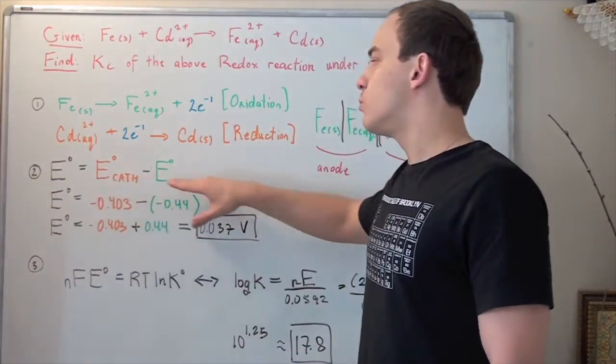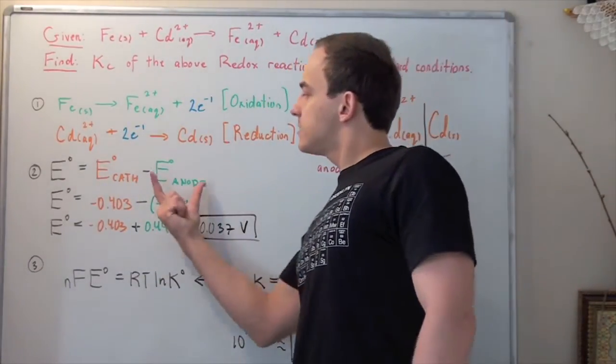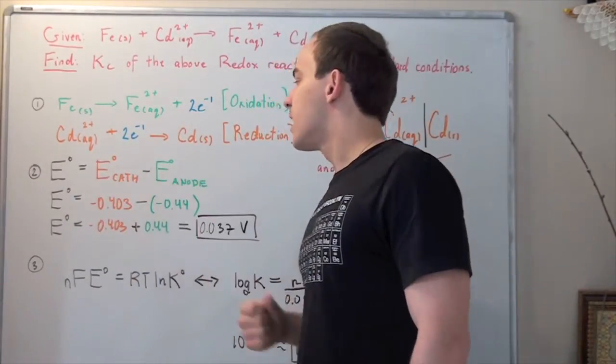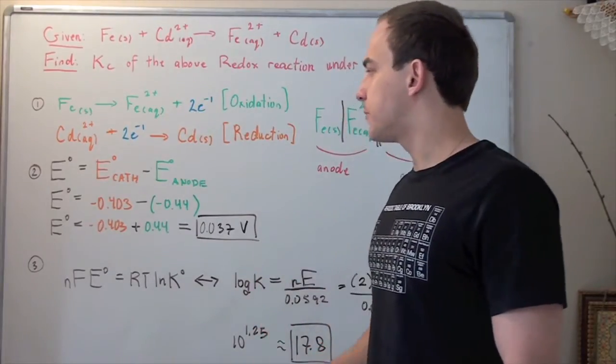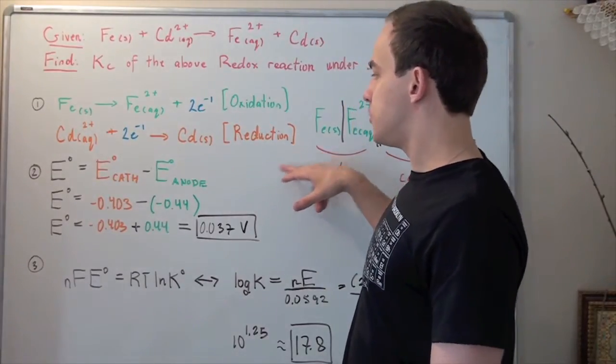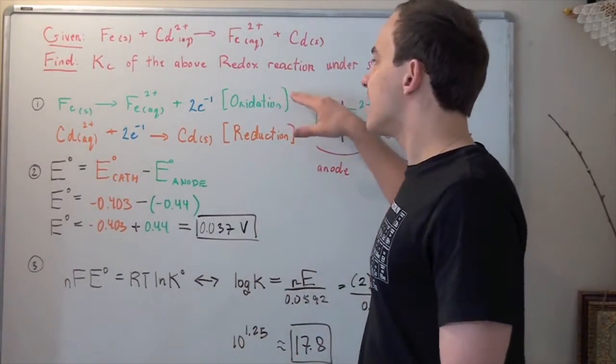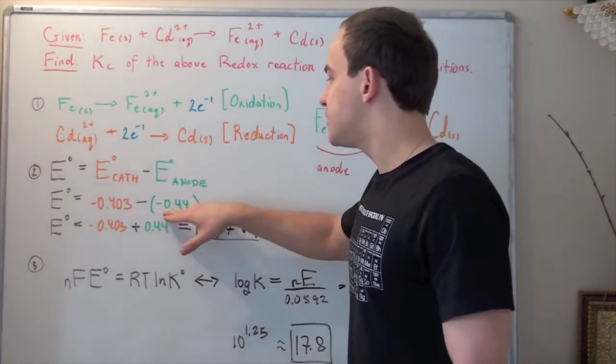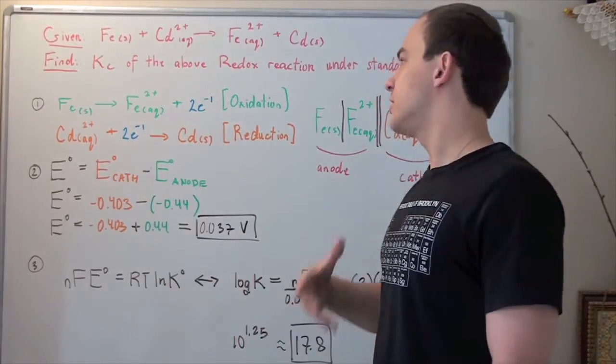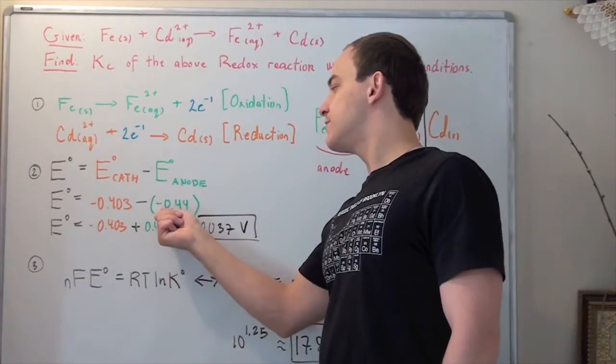This is our formula to find the cell voltage: E cell equals E reduction minus E oxidation. We look these values up on our table for reduction half reactions under standard conditions. We find that the reduction cell voltage is negative 0.403, while the oxidation half reaction is negative 0.44. Since only reduction half reactions are listed, we have to look at the reverse reaction, which gives negative 0.44.